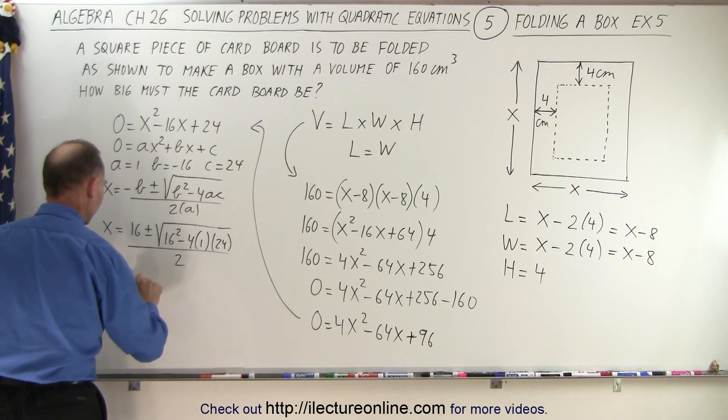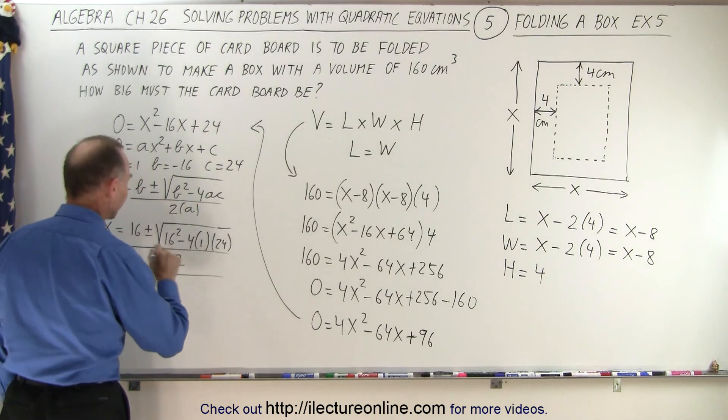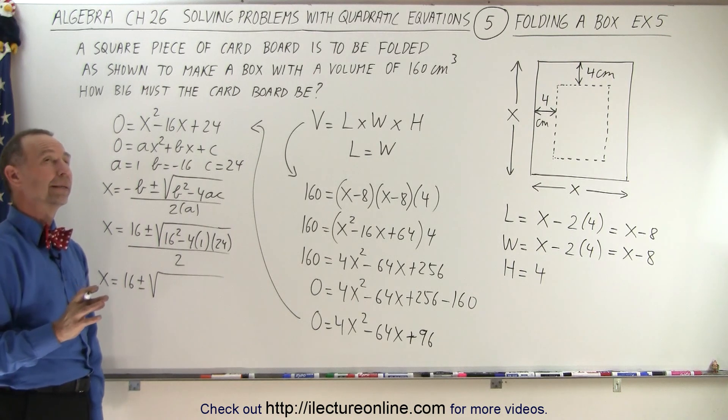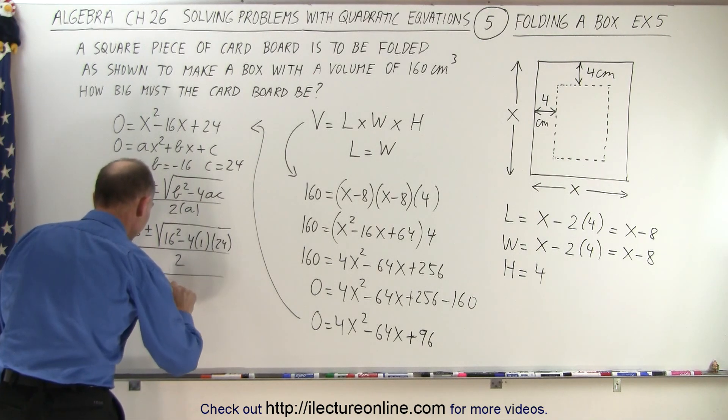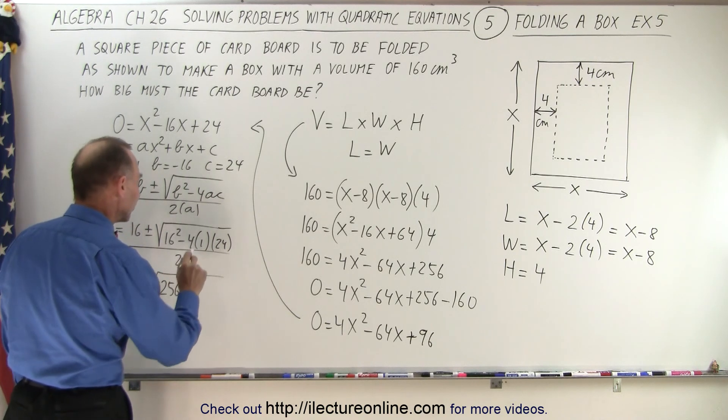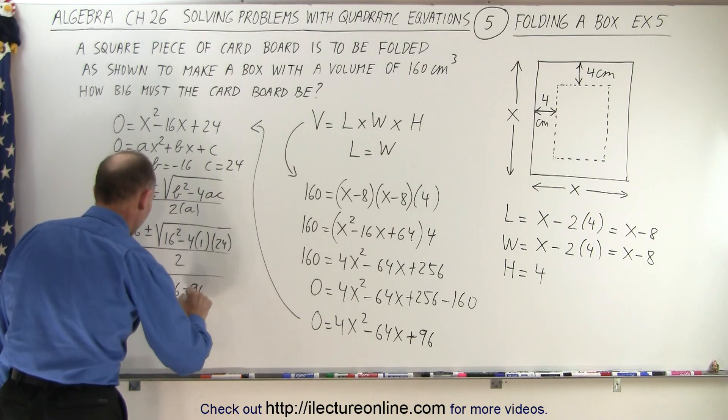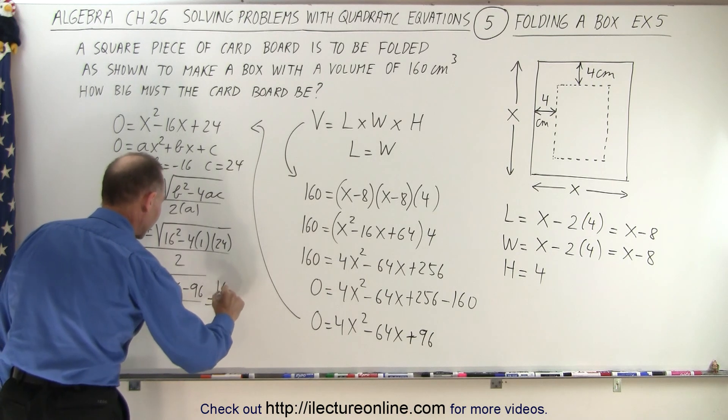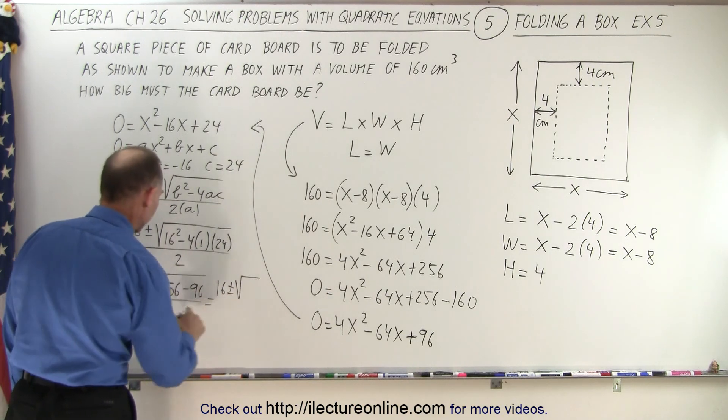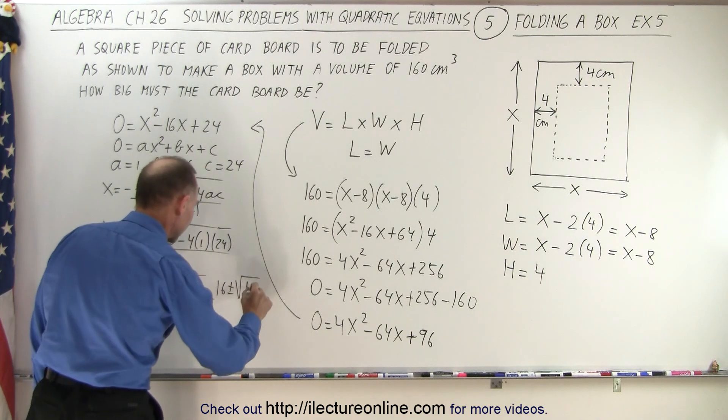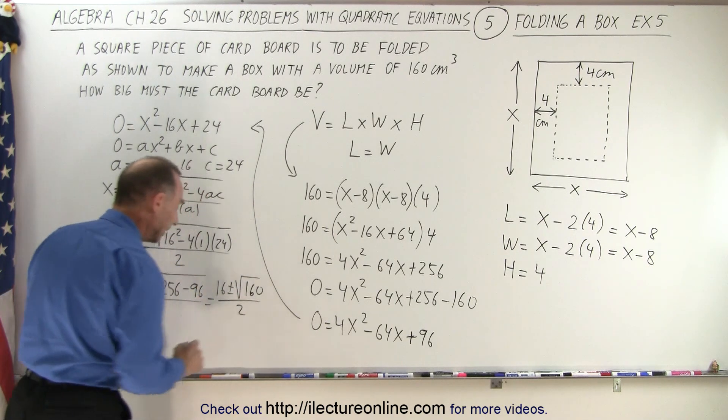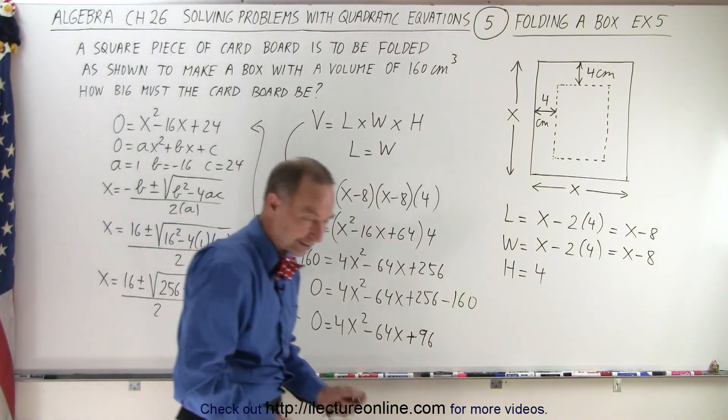So x is equal to 16 plus or minus the square root of 16 squared, that's 14 minus, that's 256, minus 96, all divided by 2, which is equal to 16 plus or minus the square root of, that would be 160, that would be 160, divided by 2, and now it looks like we're going to need a calculator.